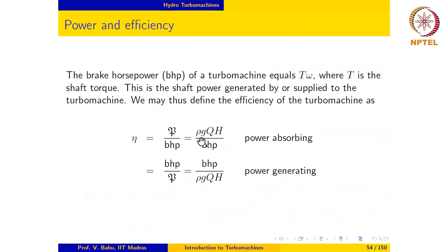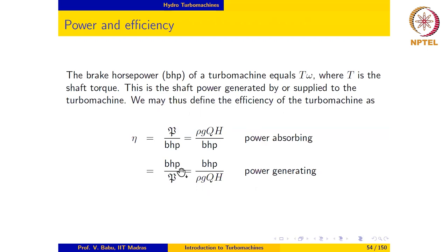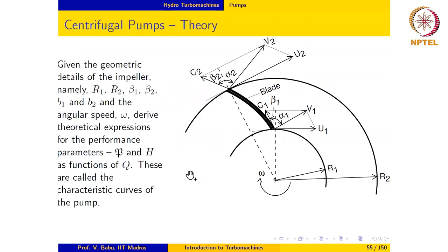The brake horsepower of a turbo machine equals torque T times angular velocity ω, representing the shaft power generated (for a power-producing machine) or supplied (for a power-absorbing machine). The overall efficiency is defined as hydraulic power P divided by brake horsepower: η = ρgQH / BHP for a power-absorbing machine like a pump, or η = BHP / ρgQH for a power-generating machine like a turbine.